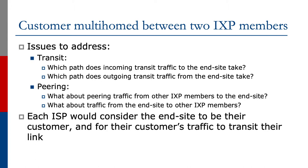The issues we need to address include transit — in other words, which path does incoming transit traffic take to the end site, and which path does outgoing transit traffic take from the end site? We also need to consider the peering situation: how does peering traffic from other Exchange Point members get to the end site, and what about traffic from the end site to other ISP members? Each ISP will consider the end site to be their customer and would like to have their customer's traffic transit their link to the customer.